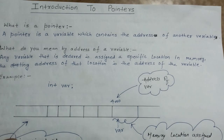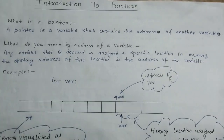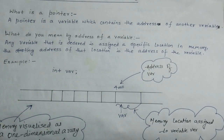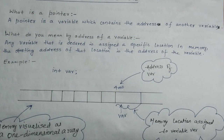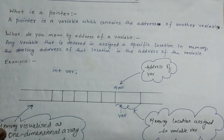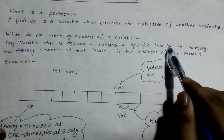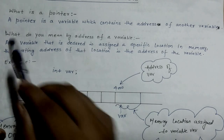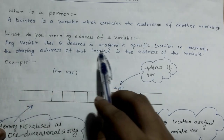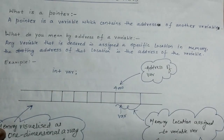You must be thinking, what do you mean by the address of a variable? By address of a variable, we mean that whenever we declare a variable, that variable is assigned a specific location in memory. The starting address of that location is the address of the variable.